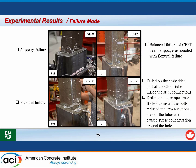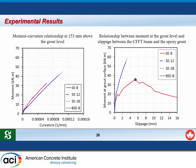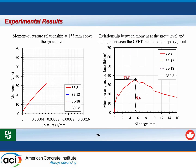Specimen number four failed in the embedded part within the steel connection due to stress concentration around the holes, and because the holes in the FRP tube reduced the cross-sectional area of the tube.